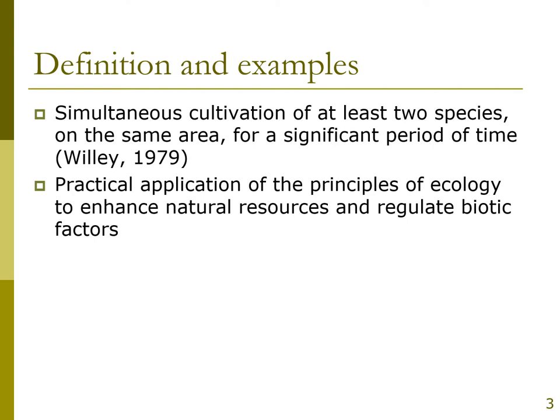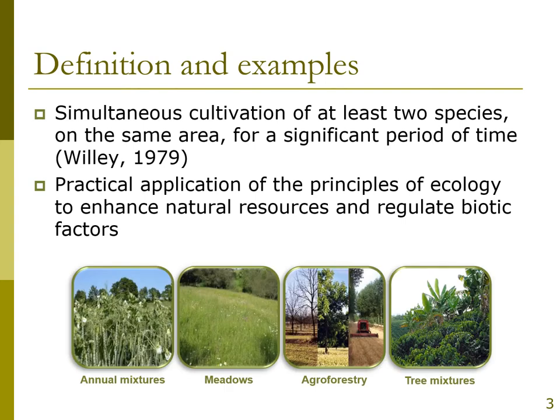Before starting on this topic, it's important to have a clear definition about what we are going to talk about. We can define intercropping or crop mixture as the simultaneous cultivation of at least two species on the same area and for a significant period of time. Intercropping must be seen as a practical application of ecology principles in order to enhance natural resource use and regulation of biotic factors. This definition covers a wide range of crop mixtures — annual crop mixtures like cereals and legumes, meadows, agroforestry combining trees and crop production, or trees mixtures like banana and coffee. In this talk, I am mostly going to focus on annual mixtures and more precisely on cereal-legume intercrops.